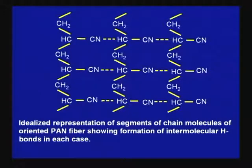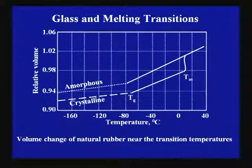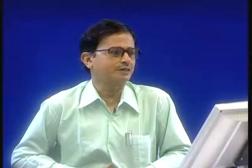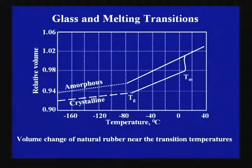You go through these structures and for new or unknown polymers, whether there is hydrogen bonding or not, you can judge yourself by looking at the structure. This diagram shows the change in properties — say volume, specific volume or relative volume — with temperature. If there is a discontinuity, from the point of discontinuity we can assess the transition temperature.